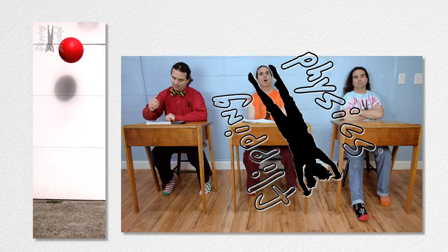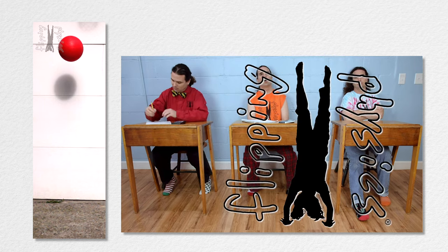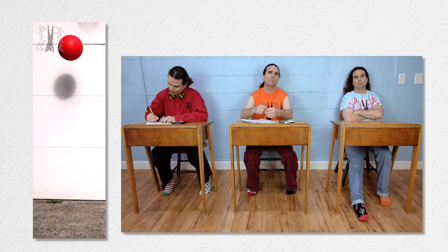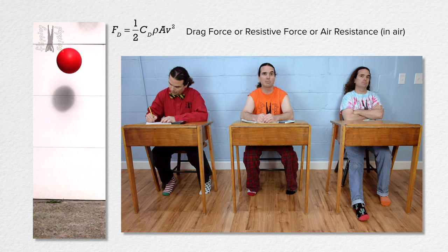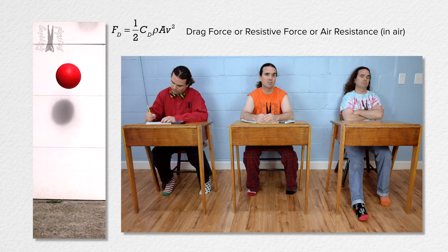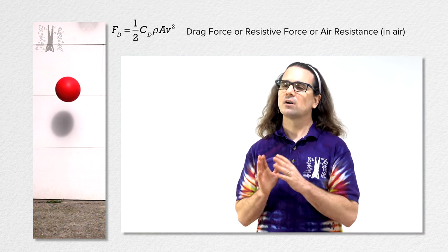Today we are going to include the drag force, so realize this ball is not in freefall. What is the drag force equation we have been using up to this point? The force of drag equals one-half the drag coefficient times the density of the medium the object is moving through, times the cross-sectional area of the object, times velocity squared.